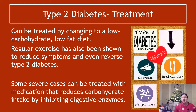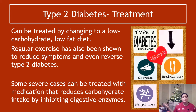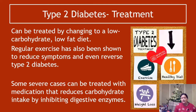Treatment for type two diabetes can involve changing to a low carbohydrate and low fat diet, and regular exercise — exercise seems to be the cure for everything. It's been shown to reduce symptoms and even reverse type two diabetes altogether in some cases, so the liver cells start responding normally to insulin again. Some severe cases are treated with medication that reduces carbohydrate intake by inhibiting digestive enzymes.